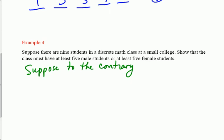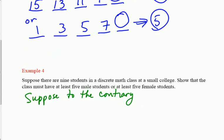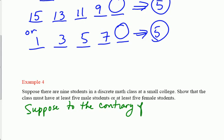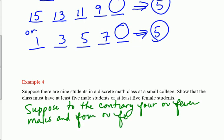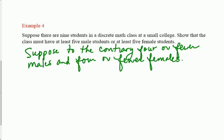Suppose to the contrary that you don't have at least five males or at least five females. The negation of that is you have four or fewer males and you have four or fewer females. At least five male students means I'm greater than or equal to 5. At least five female students means I'm greater than or equal to 5.